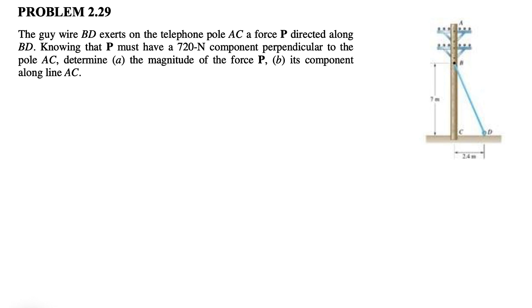We know that P must have a 720 Newton component perpendicular to the pole AC. So if we call our X and Y in here like this, what the question is saying is that the perpendicular component to AC, which is basically our horizontal or FX, is 720 Newtons.